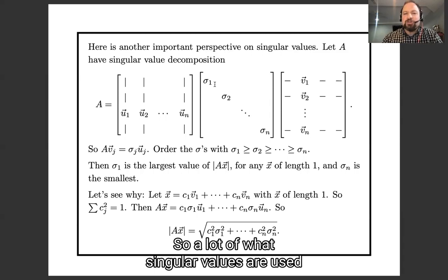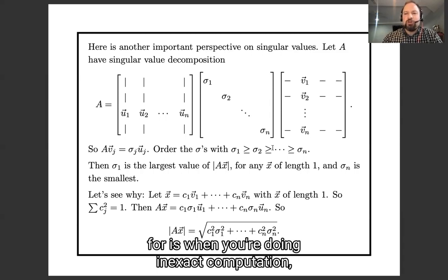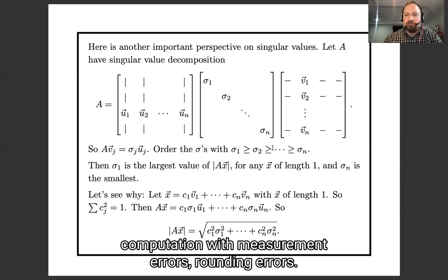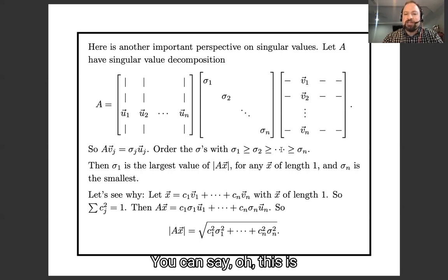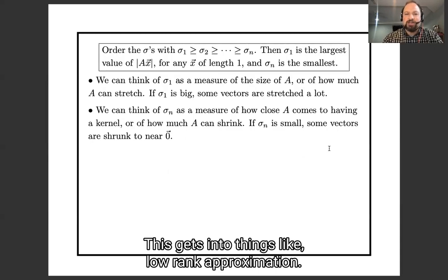It is not true that if the determinant is close to 0, then the matrix is close to having a kernel. But it is true that if the smallest singular value is small, then the matrix is close to having a kernel. So a lot of what singular values are used for is when you're doing inexact computation, computation with measurement errors and rounding errors, you can look at the singular values, and if they're close to 0, you can say, oh, this is close to being a matrix with kernel, a matrix with low rank, and this gets into things like low rank approximation.